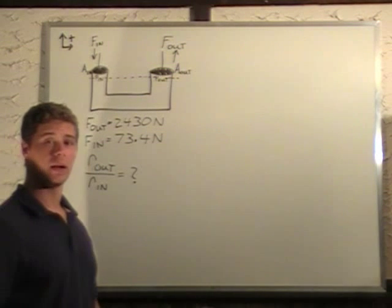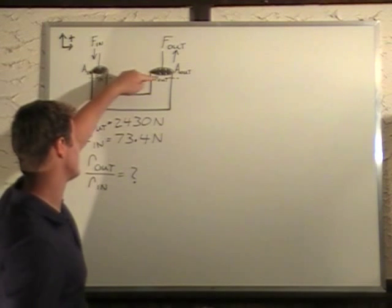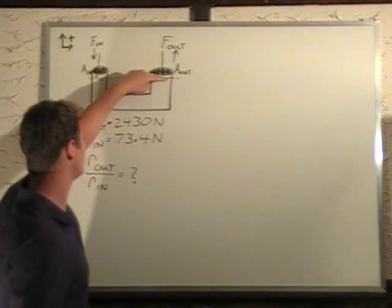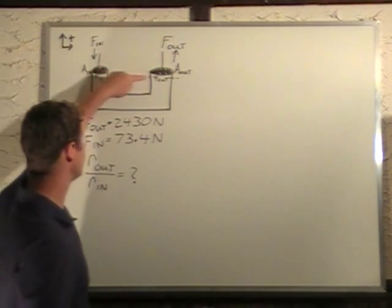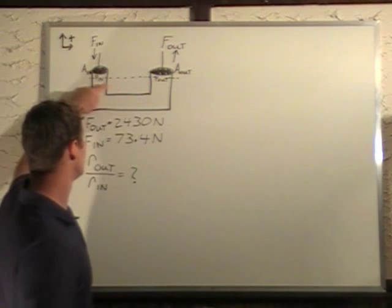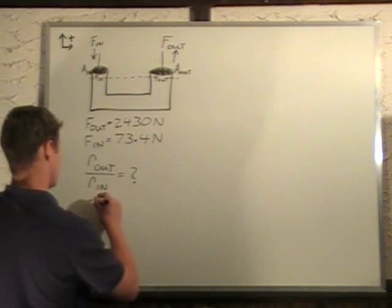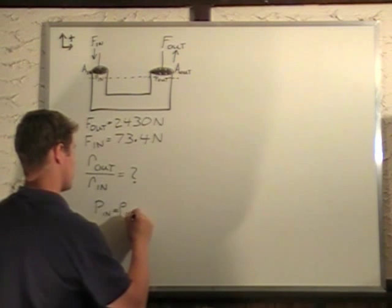Now, a key point here is that pressures in an incompressible fluid are the same at the same heights. So the input piston is here, the output piston is here at the same height, so the pressures just underneath these pistons are identical. Pressure in equals pressure out.